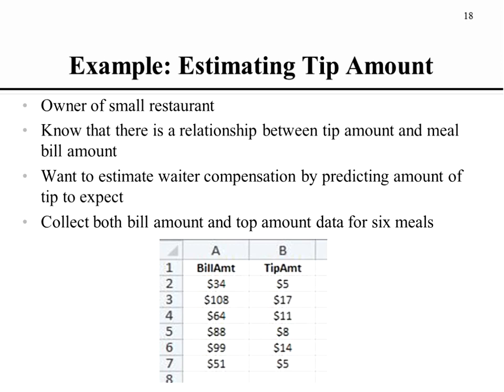We're going to use an example: imagine we're the owner of a small restaurant. We intuitively know there's a relationship between the bill a customer pays and the tip they leave. What we'd really like to do is make an estimate of waiter compensation by predicting the amount of tips the waiter might expect. If we have a good sense of what typical nightly bills are, we can predict earnings for the waiter. So our question is: when the bill amount changes, what impact does that have on the tip amount? Tip amount is our dependent variable and bill amount is our independent variable, and we'll collect data for six meals.